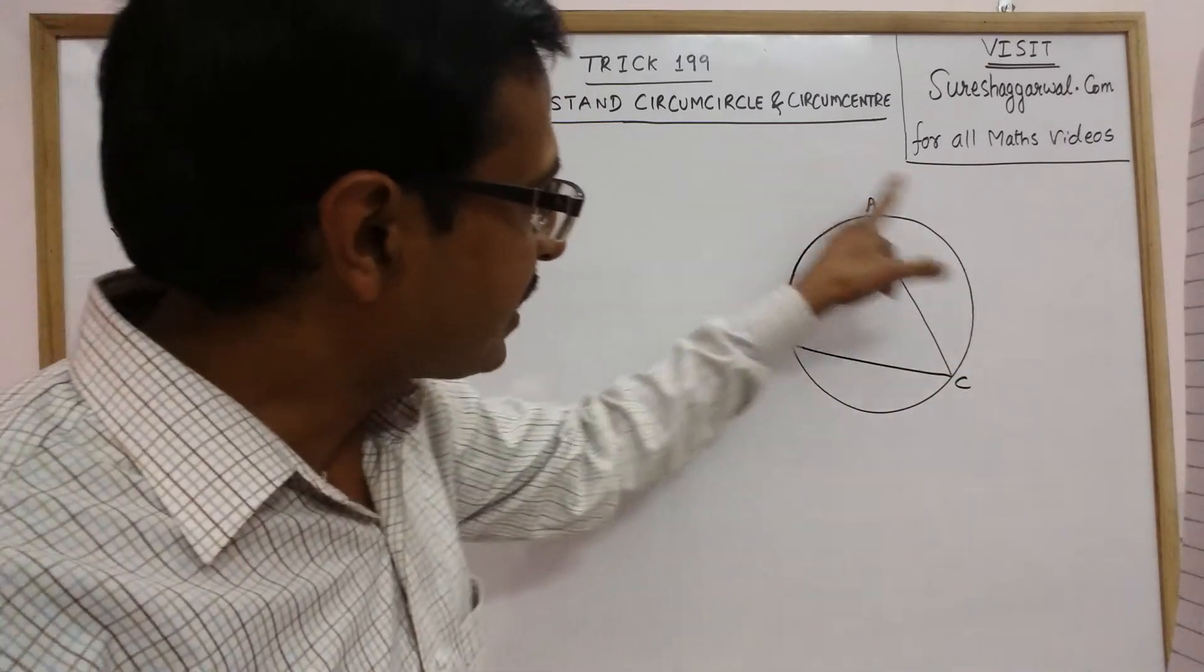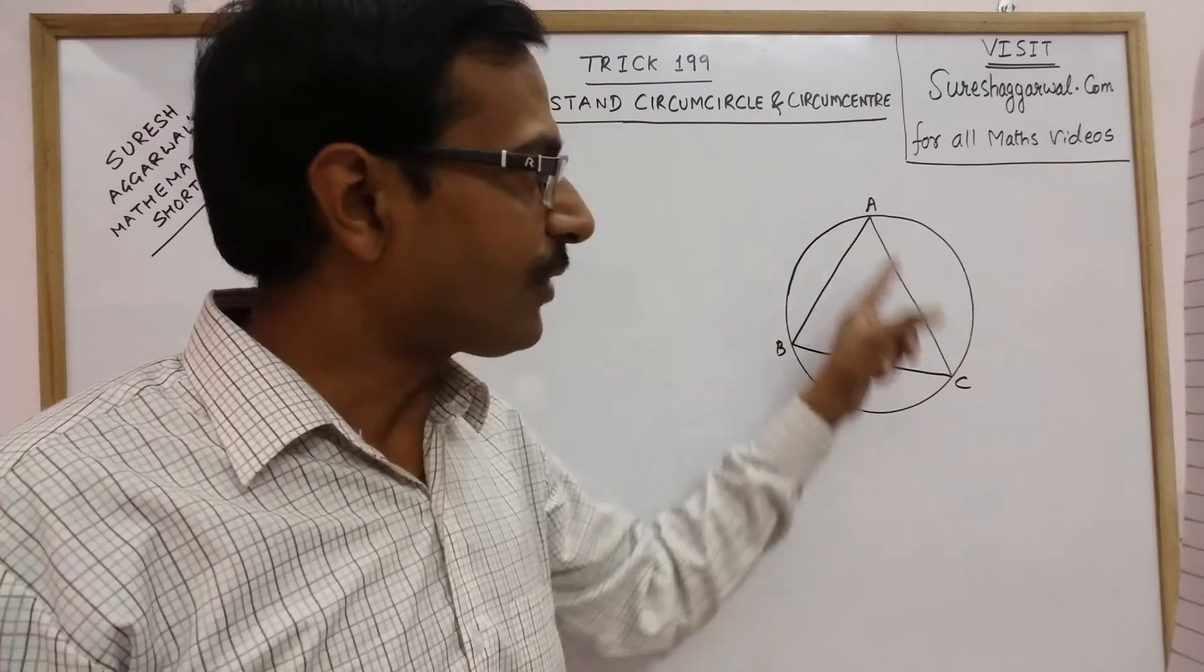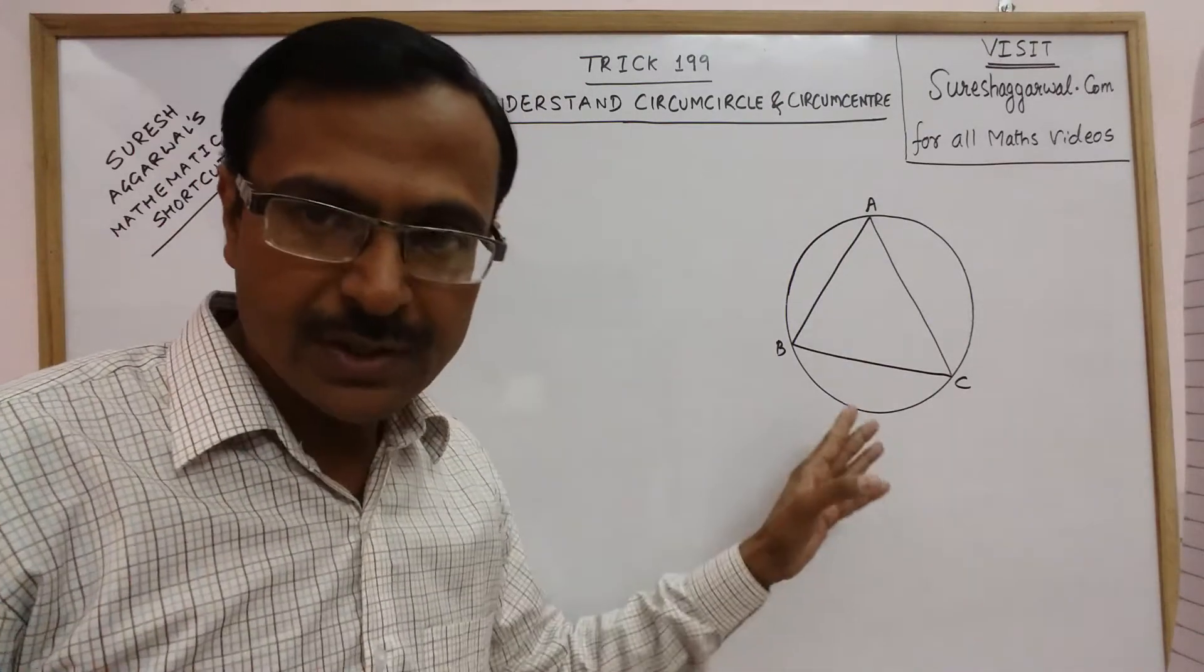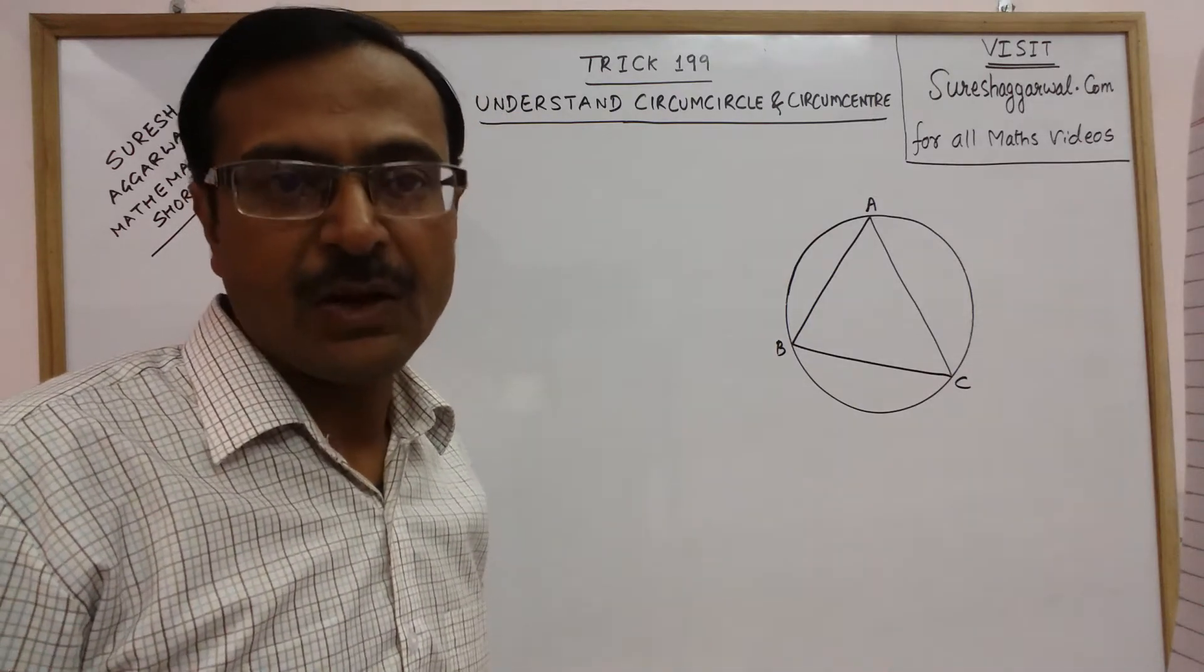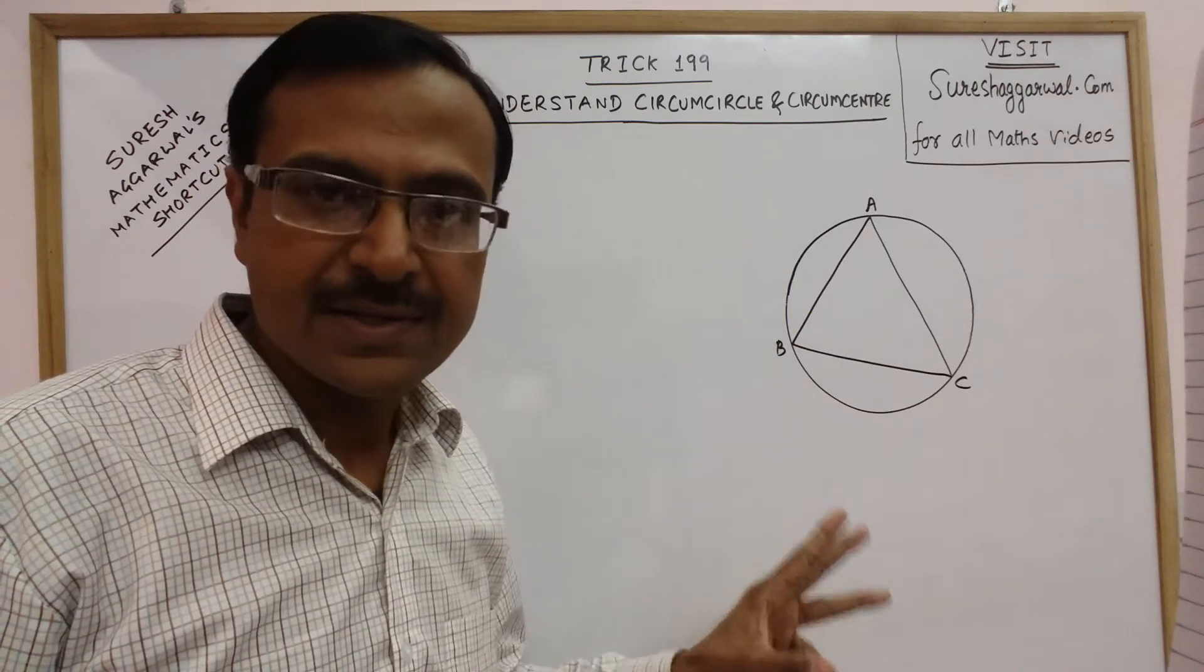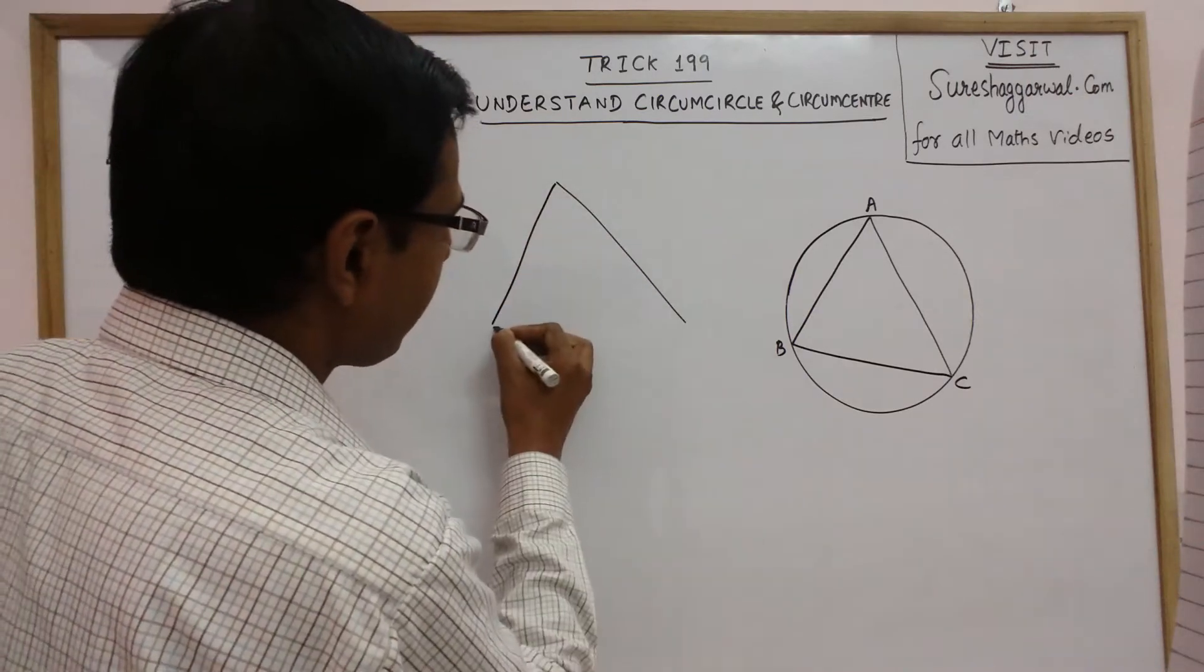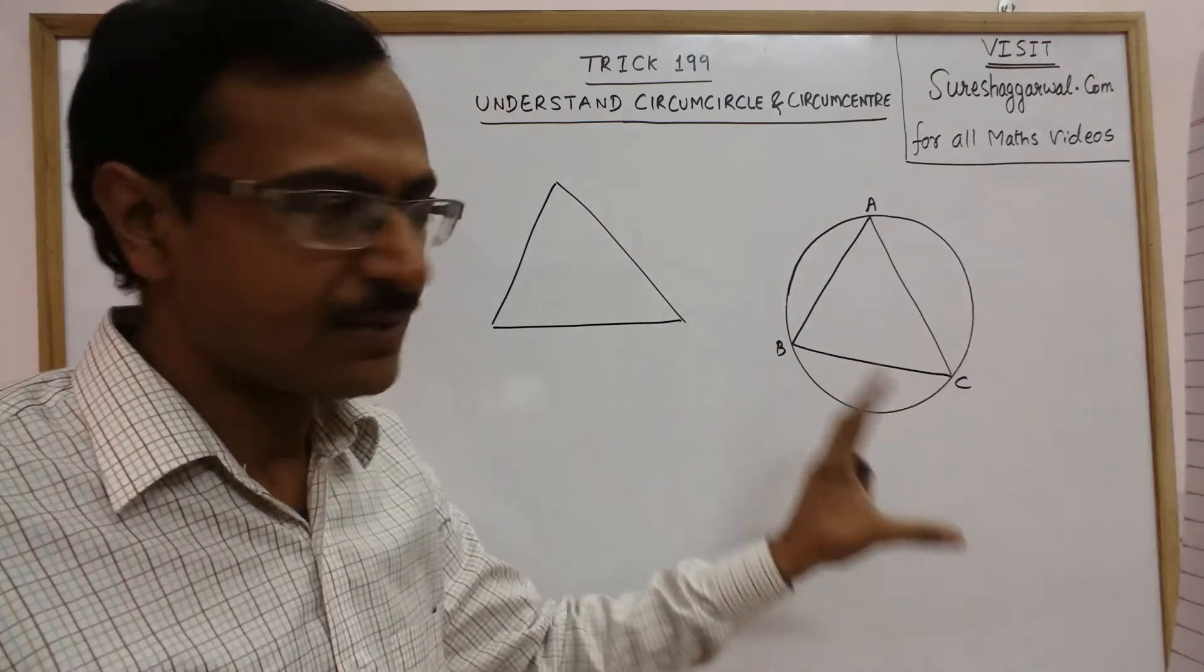This circle which touches all the three vertices of triangle ABC is called circumcircle. Now, let us see how we can draw this, construct this and understand what is the meaning of circumcenter and circumradius. If we have a triangle, say given triangle ABC and we need to construct the circumcircle of this triangle ABC.